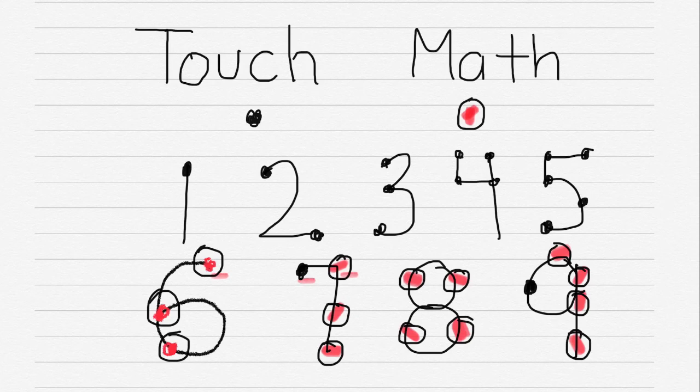Likewise with the 8, we have 4 dots with a circle. So that counts as 1, 2, 3, 4, 5, 6, 7, 8. And lastly, we have 4 dots with a circle that gets us to 8, and then we have a single one, which gets us to 9.